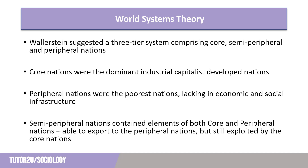The dominance of the industrial capitalist nations in the core led to them being able to exploit the other two groups. Unlike dependency theory, Wallerstein argued that semi-peripheral nations, whilst being exploited by the core, were also able to exploit the peripheral nations. These semi-peripheral nations had adopted some of the values of core nations and had begun to expand with the aim of becoming core nations.